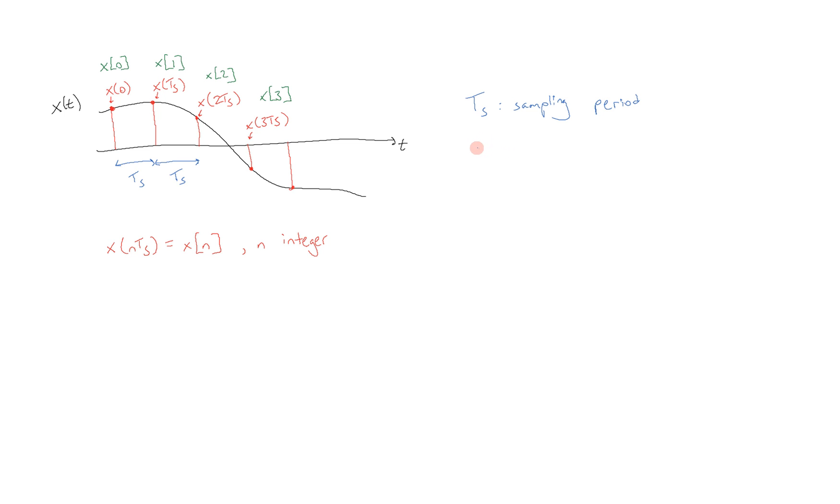And a more commonly used metric is f sub s, which is equal to 1 over t sub s, and this is called the sampling frequency or the sampling rate. Both of these things refer to the same thing.